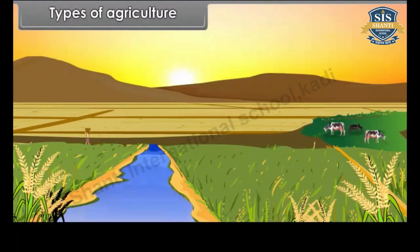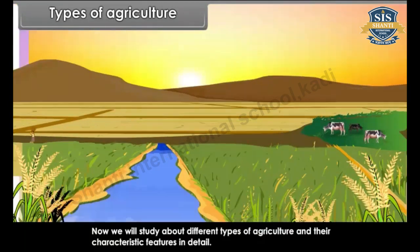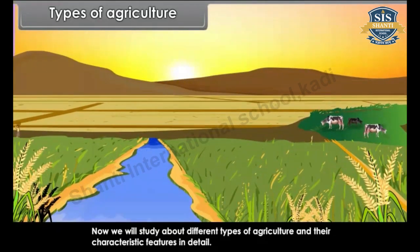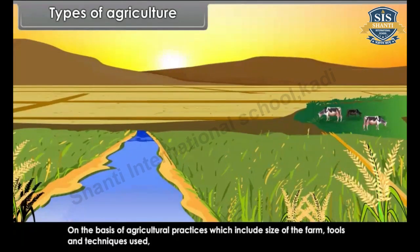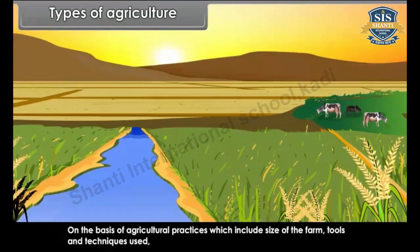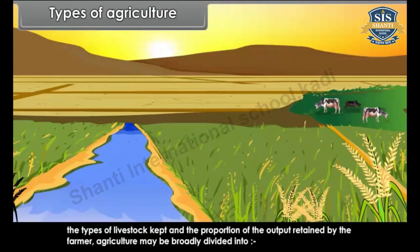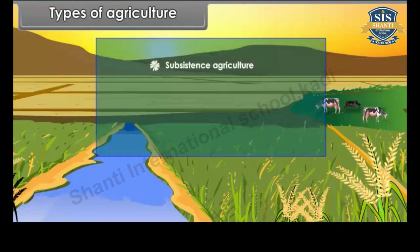Now we will study about different types of agriculture and their characteristic features in detail. On the basis of agricultural practices — which include size of the farm, tools and techniques used, the types of livestock kept and the proportion of output retained by the farmer — agriculture may be broadly divided into subsistence agriculture.